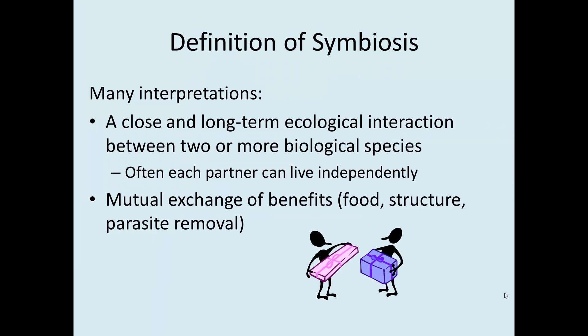Definition of symbiosis: in general, it's considered to be a close and long-term ecological interaction between two or more species. Importantly, there is a mutual exchange of benefits. One partner generally will get some kind of food, whether on the molecular level or an actual mouthful of something, or there's a structure provided, protection provided, or parasites are removed. Many different things are exchanged, but both partners get something out of the deal.